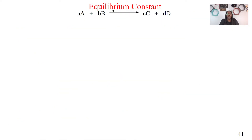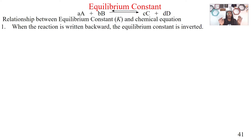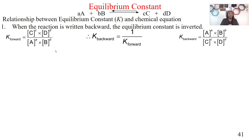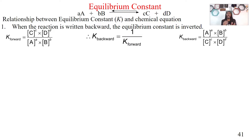Let's talk about the equilibrium constant and how we can relate it to a chemical equation. The first relationship: when the reaction is written backwards, the equilibrium constant is inverted. So the forward reaction is products over reactants, but if it's backwards, reactants are over products. That means our equilibrium constant becomes 1 over our forward K. So if you're going backwards, you can just do 1 over K.